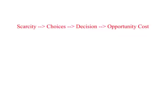What we discussed is that because we face a constraint of resources — it could be time, money, or factors of production — what we call in economics scarcity of resources, we will have a number of choices available to us, and we will be forced to decide. And when we decide, we incur a cost called opportunity cost.